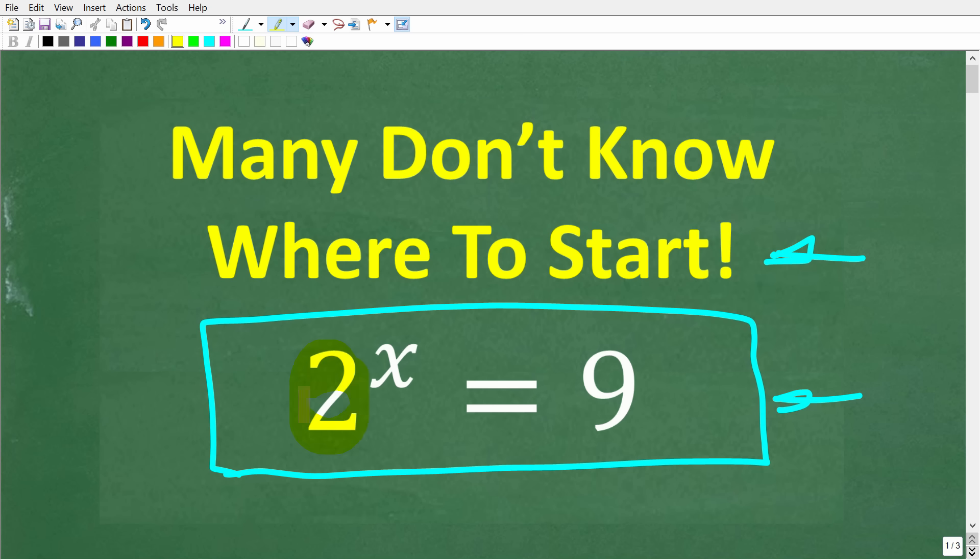So the problem is 2 to the x power is equal to 9, and we're trying to solve this equation for the variable x. Now, feel free to use a calculator, but if you think you know the answer, go ahead and put that into the comment section. I'm going to show you the correct solution in just one second.